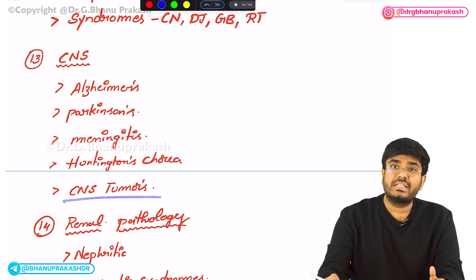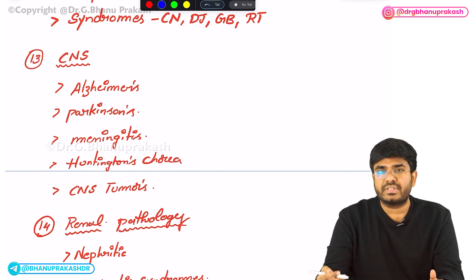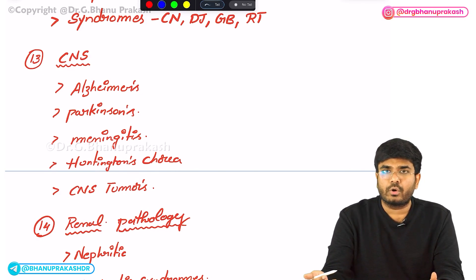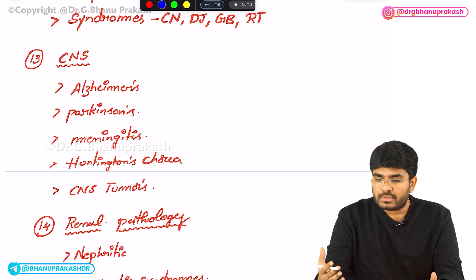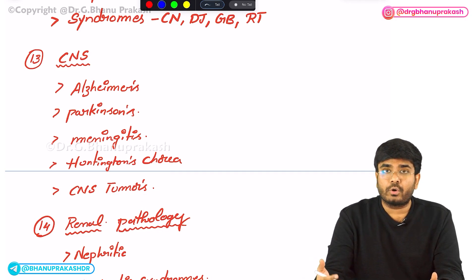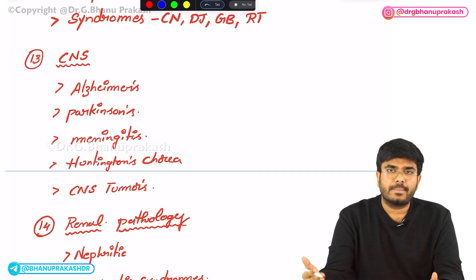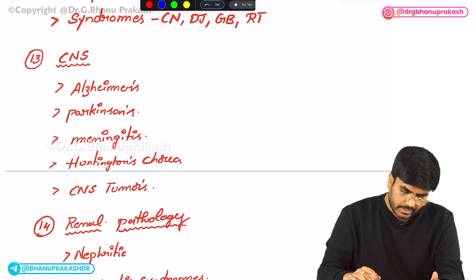For CNS tumors, know the different types: meningioma versus thymoma versus oligodendroglioma, astrocytoma. You have to know the different types of CNS tumors on a comparison basis.